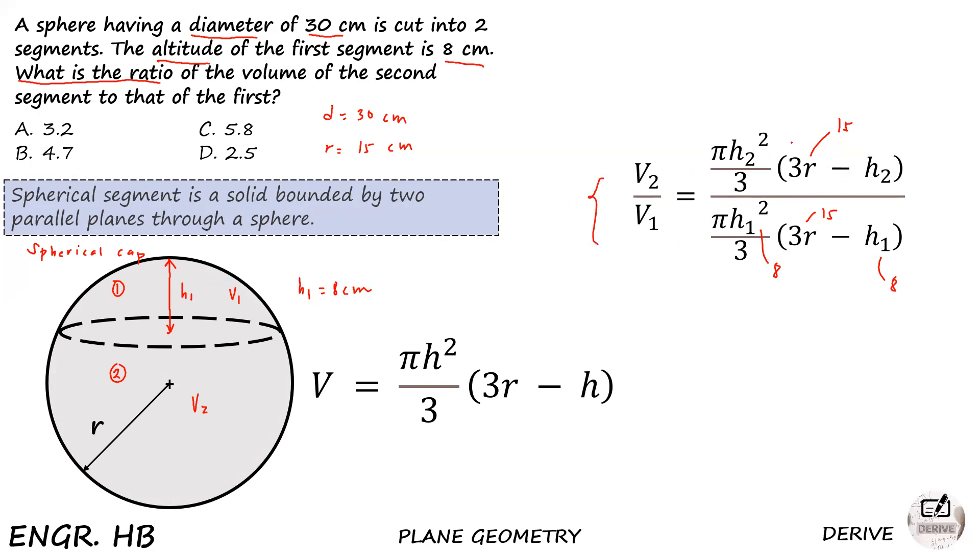So what's missing in our formula? What's missing of course is h sub 2. So what is h₂? This means if this is the altitude of the first segment, this is the altitude of the second segment. And what is the amount of this altitude? This is h₂. So what is h₂?